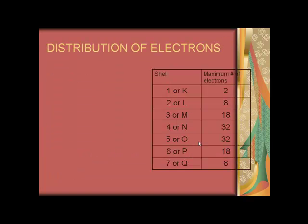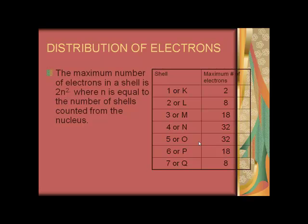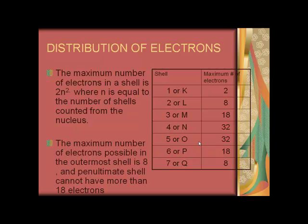Distribution of electrons: The maximum number of electrons in a shell is 2N square where N is equal to the number of shells counted from the nucleus. The maximum number of electrons possible in the outer shell is 8 and in the penultimate shell it cannot have more than 18 electrons.